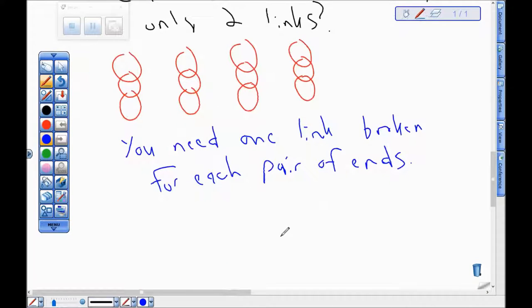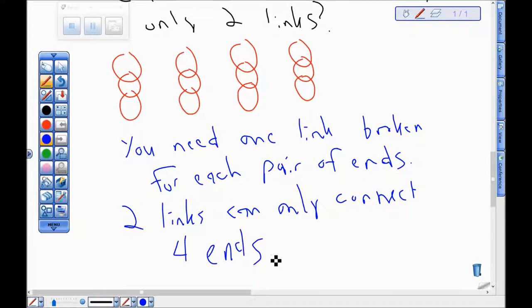So if we're going to do this with two, the question is which two would I be able to break in order to leave myself - so two links - two links can only connect four ends, right? Because I need a link for every pair of ends. So if I go up here and I say okay, I'm gonna break this guy and this guy, I've got way too many ends left, right? Because I'd have one, two, three, four, five, six, seven, eight ends. That's no good.